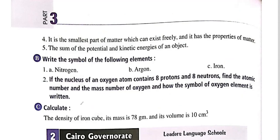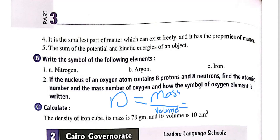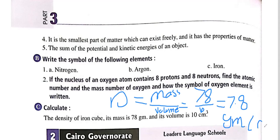Calculate the density of an iron cube with mass 78 grams and volume 10 cubic centimeters. Density equals mass over volume: 78 ÷ 10 = 7.8. The unit of mass is grams and the unit of volume is cubic centimeters, so the density is 7.8 grams per cubic centimeter.